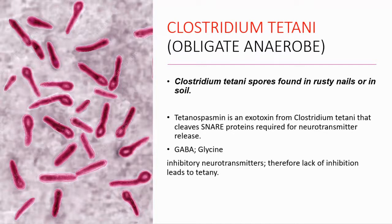Tetanospasmin is an exotoxin from Clostridium tetani. It cleaves SNARE proteins required for neurotransmitter release. GABA and Glycine are inhibitory neurotransmitters, so lack of inhibition leads to tetany.